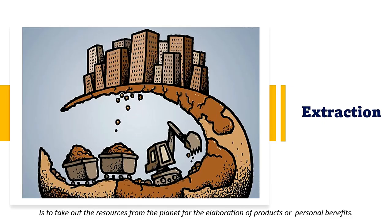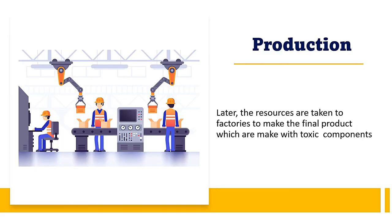The first step is resource extraction — withdrawing materials from the natural environment. Logging is one example: extraction of trees, if not done sustainably, causes soil erosion and nutrient removal from the logged area. Extraction means taking resources from the planet for preparation of products or personal benefit. The second step is production — resources are taken to factories to make final products, which may involve toxic components.